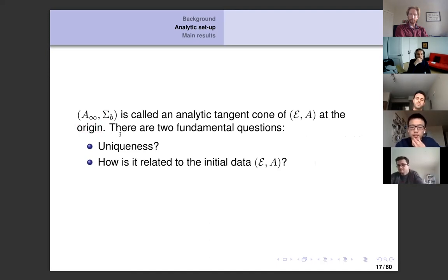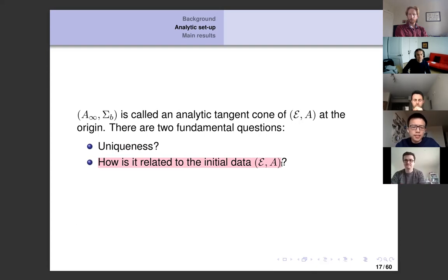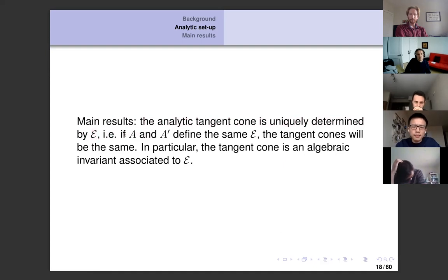There are two fundamental questions about this analytical tangent cone. The first is uniqueness: since the tangent cone depends on the choice of subsequence, we need to ask whether the limit is unique. The second question is: supposing uniqueness, how is the tangent cone related to the initial data — how does it depend on E and A? These are two fundamental questions we address in this talk.